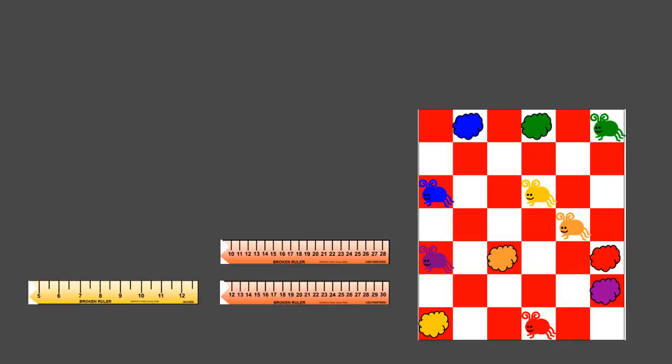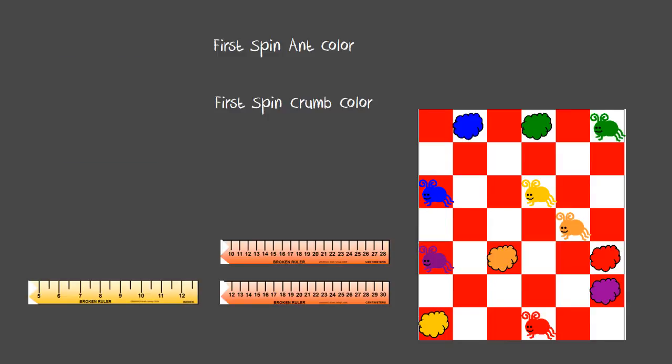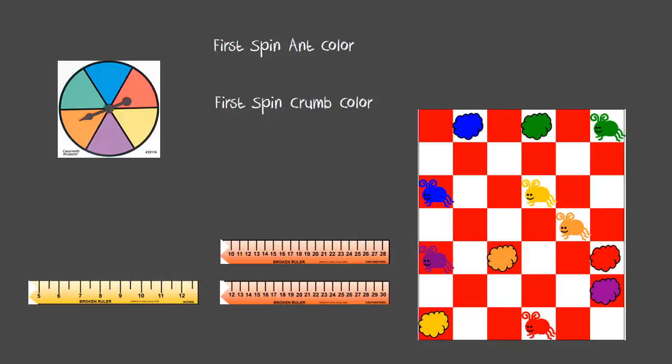To start the game, students will take turns. The first student will spin the spinner to get an ant color, so they spin and get the ant color of blue. They will then spin for the crumb color, they spin again and get orange. So you measure from a blue ant to an orange crumb. They'll take one of the rulers and measure the distance.